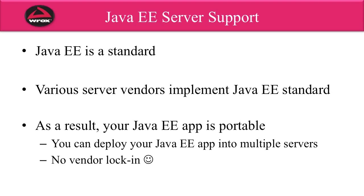That was just a quick overview of some of the key components. Now you may wonder where you run or deploy a Java EE application. For that, you need to make use of a Java EE server. Java EE is a standard from Oracle — they spec'd out exactly what the technologies are and what they should provide. Various server vendors will then implement the Java EE standard. As a result, your Java EE application is portable. You can create your Java EE application, deploy it onto one server, and later move it to another server, because there's no vendor lock-in and there are a large number of server vendors to choose from.